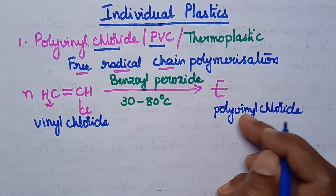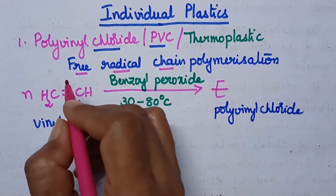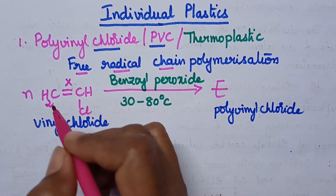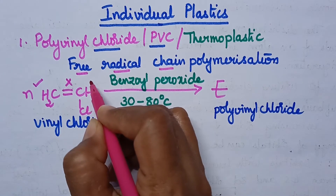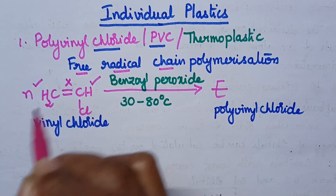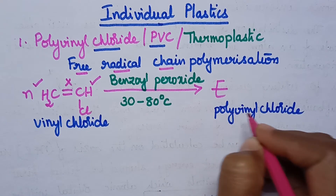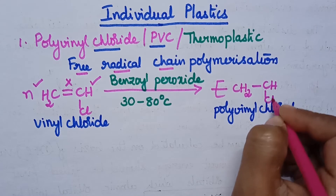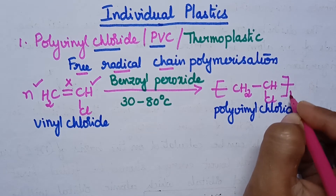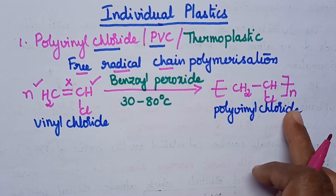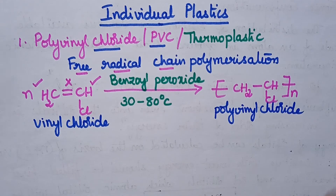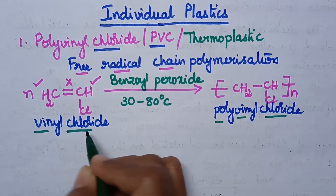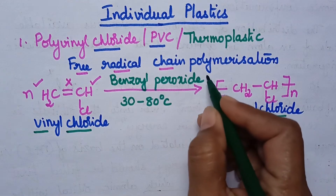During the formation of polyvinyl chloride, initially the double bond of vinyl chloride undergoes cleavage. With the result, chain extension takes place on either side of the monomer and hence the structure of polyvinyl chloride is CH₂-CHCl, repeated n number of times. The monomer used is vinyl chloride and the catalyst used is benzoyl peroxide.